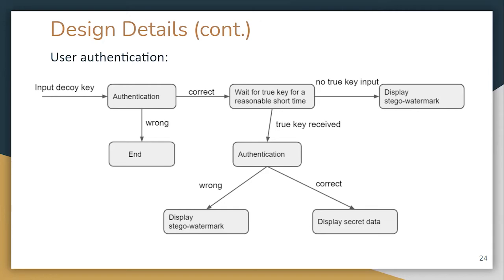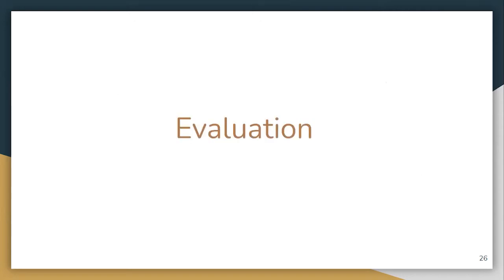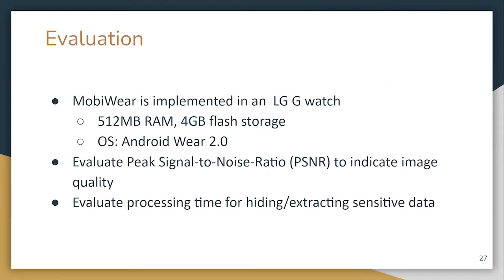For the hiding part, we use the LSB technique to hide sensitive data. We implement MobiWear on an LG G Watch equipped with 512 MB memory and 4 GB flash storage running Android Wear 2, using a gyroscope to enter keys.